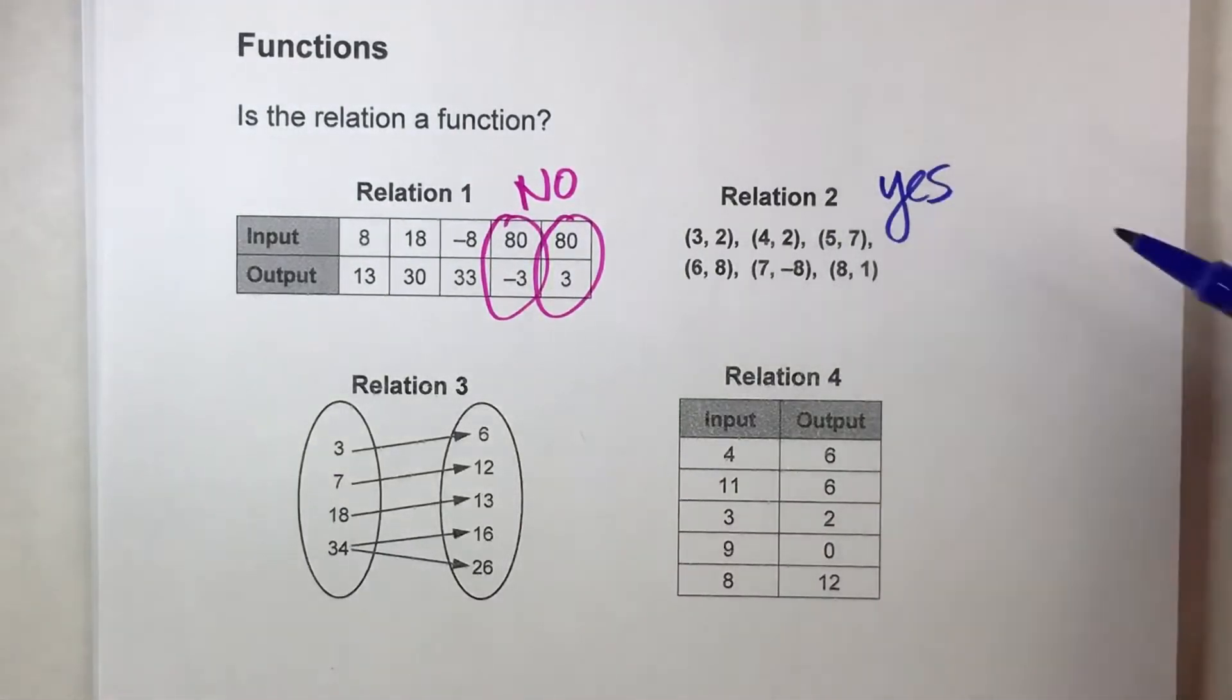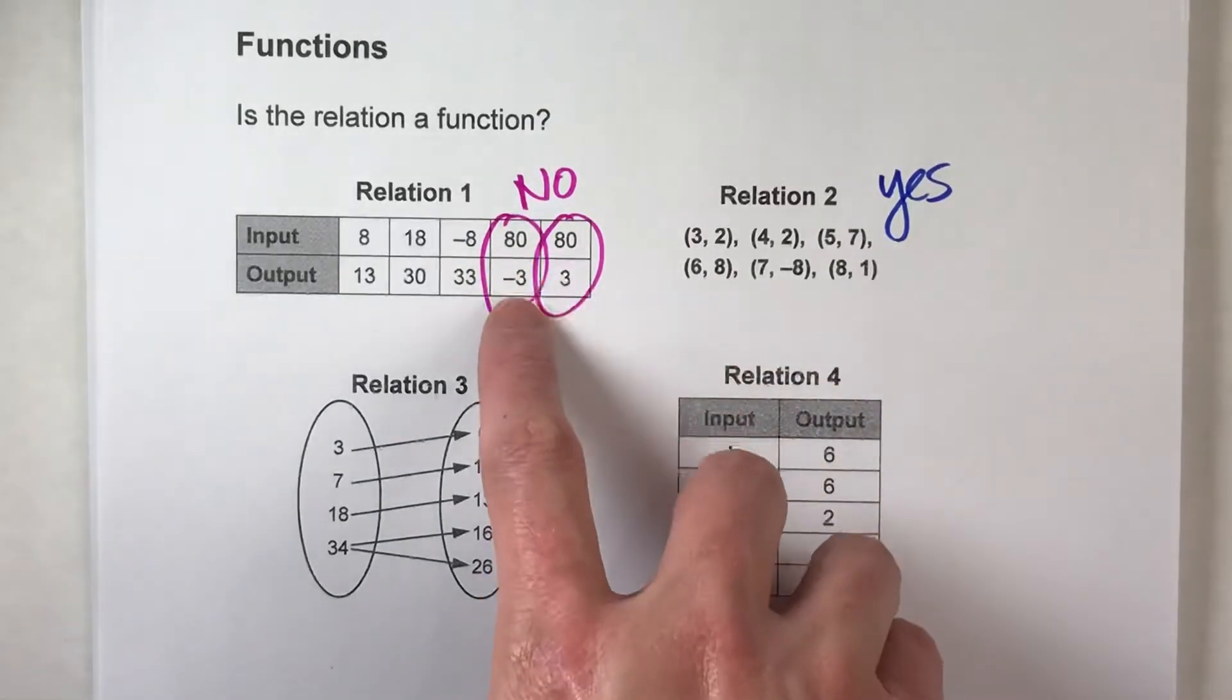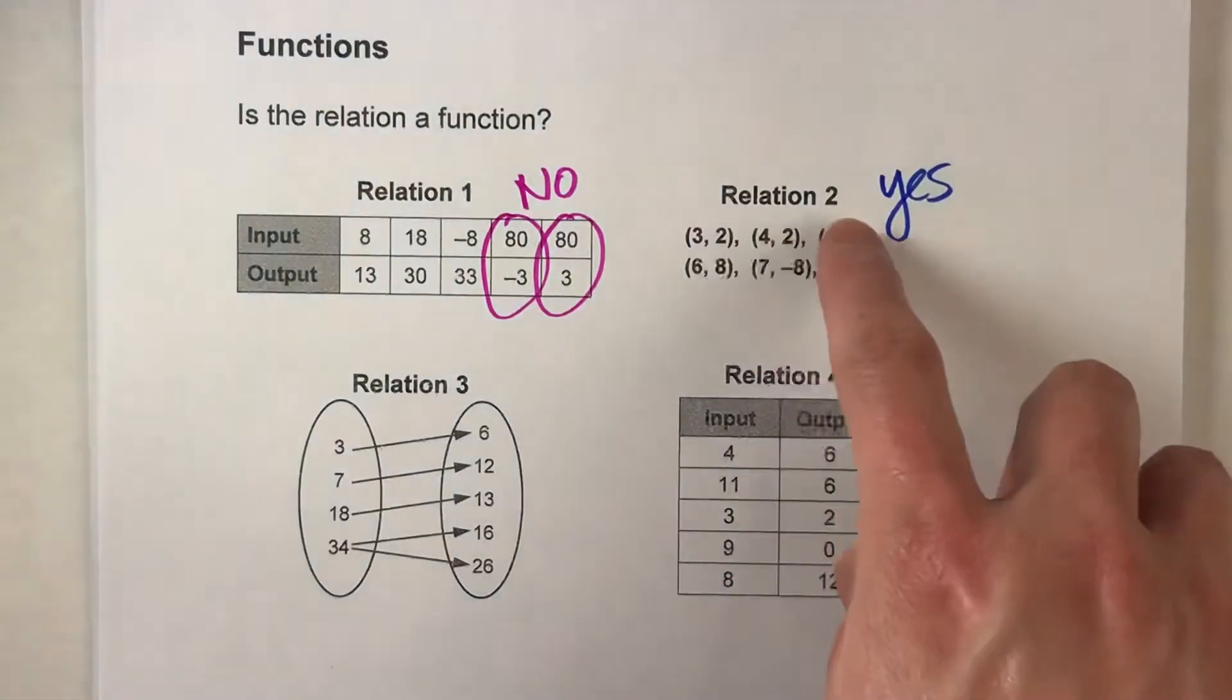This is a function. You don't really have to figure out what the rule is to calculate the output. You're only checking to see if every single input gives us one output, and if it doesn't it's not a function. If it does then it is.